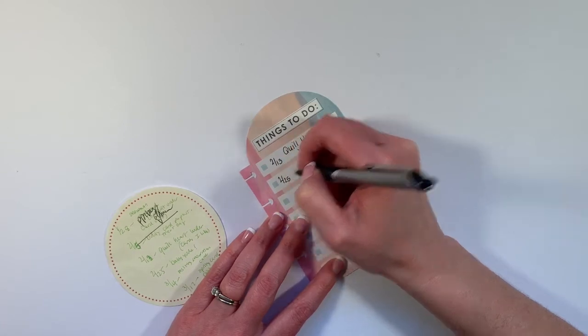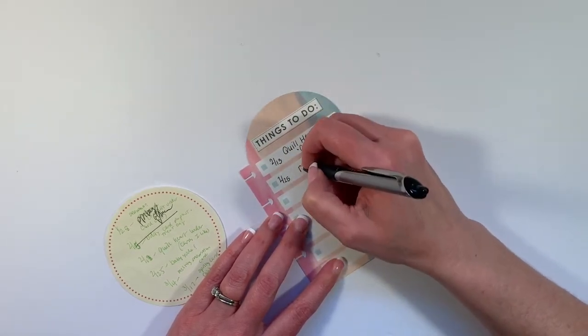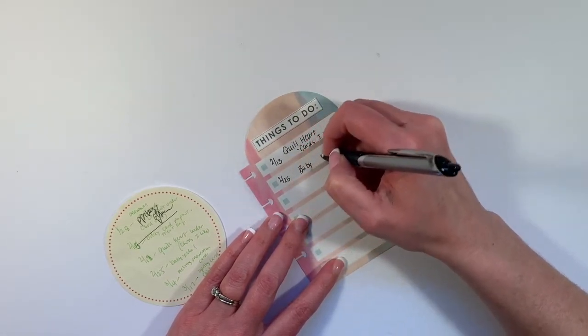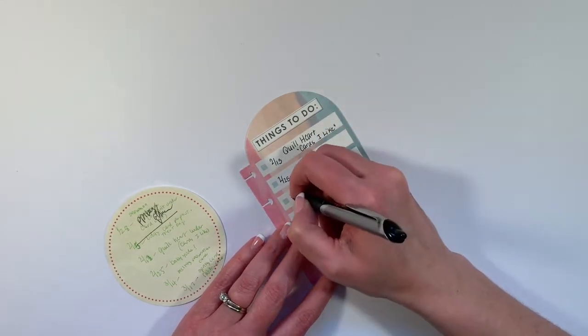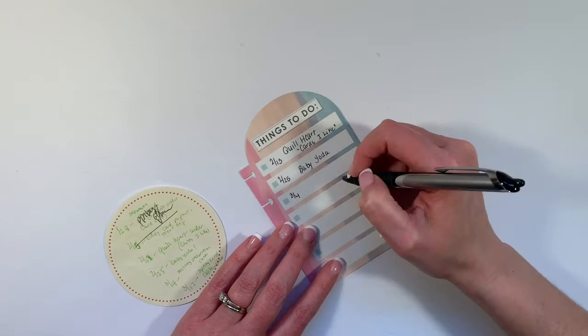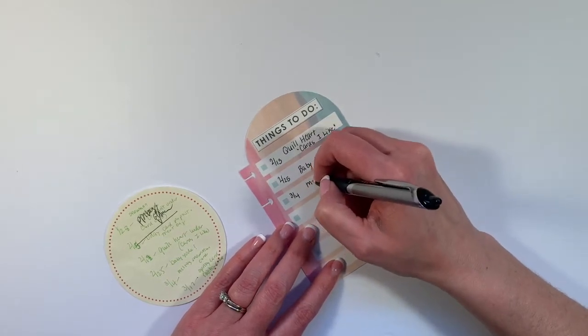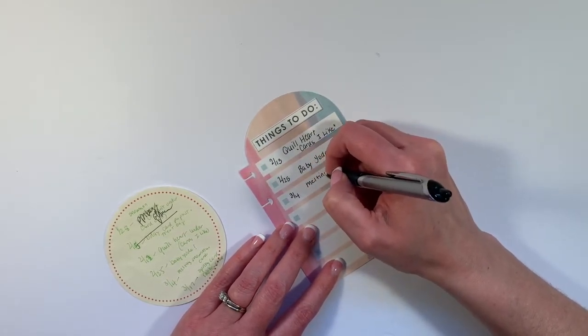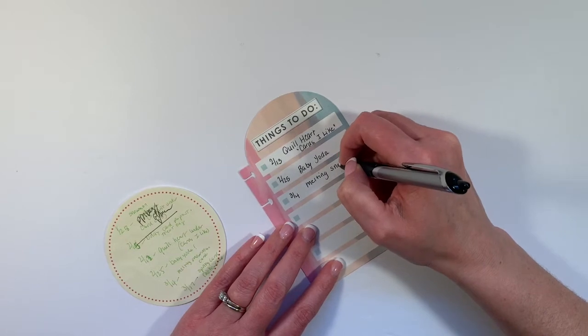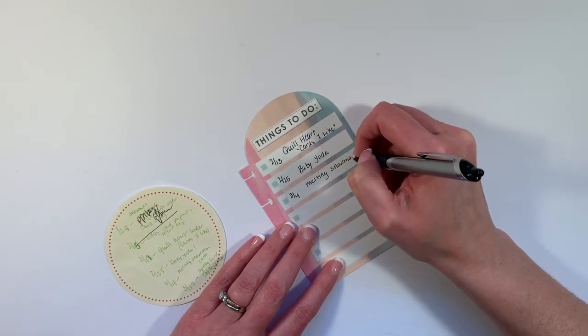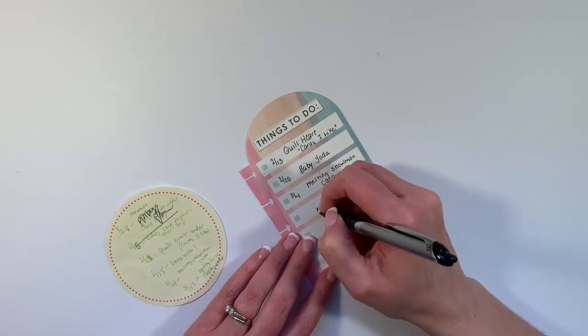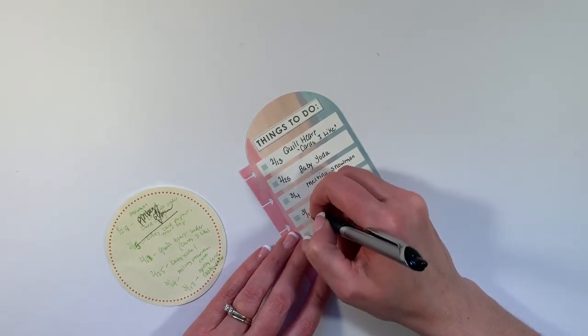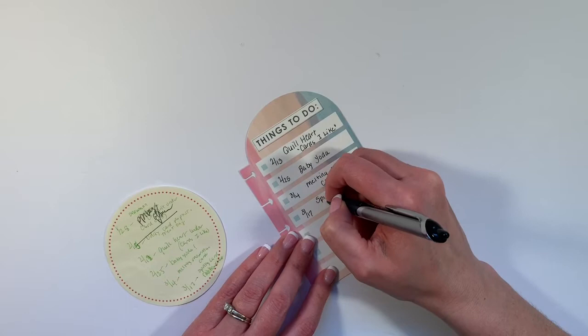On the 25th is our next card class, and we are going to assemble a Baby Yoda. And our next card class, we're going to do the Melting Snowman card for spring. And on the 17th, I want to do a spring card.